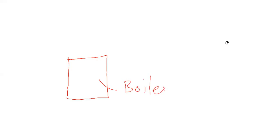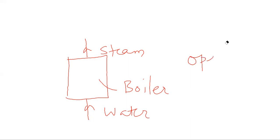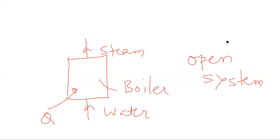When talking about a thermal power plant, we generally have steam generation in a steam generator, commonly known as a boiler. Water enters and steam comes out. We have studied that whenever there is mass transfer it is an open system. Because water is getting converted to steam, this cannot happen without a supply of energy, and in the steam generator we supply this energy in the form of heat.